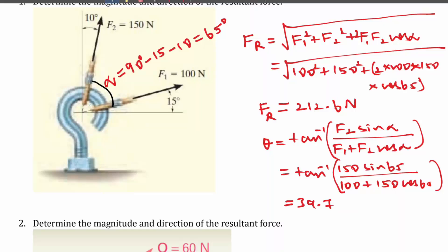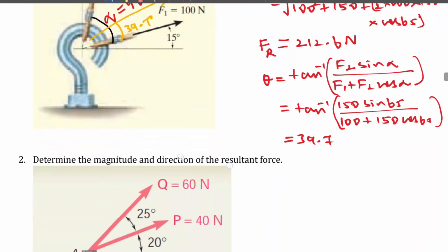Now I am going to mark the resultant force here. The resultant FR has a magnitude of 212.6 N, and its inclination from F1 — not from the horizontal axis — is 39.7°.